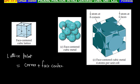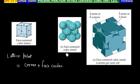This atom is on this corner, and we have one atom on this corner, one atom on this corner, one atom on this corner, and we also have one atom on the face. So this is a space filling model of FCC lattice, that is face centered cubic.